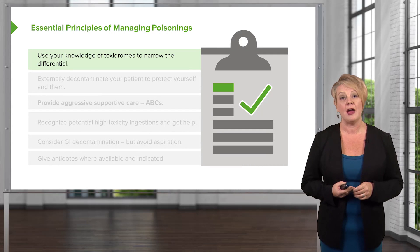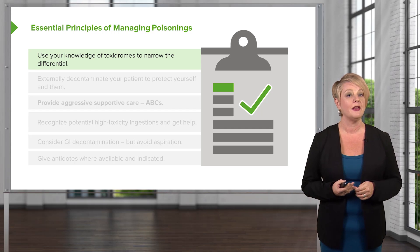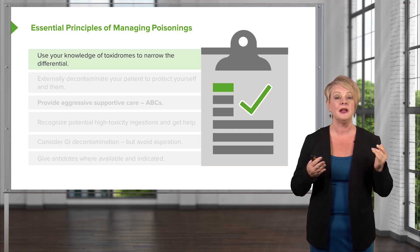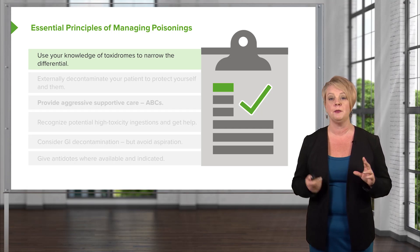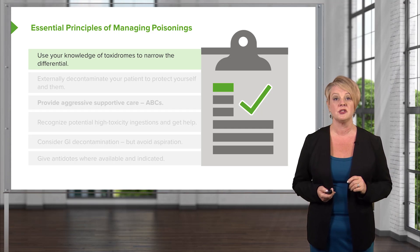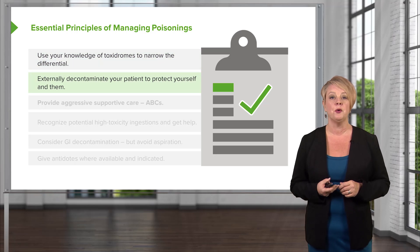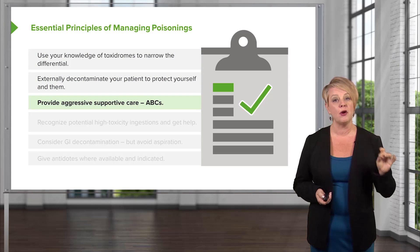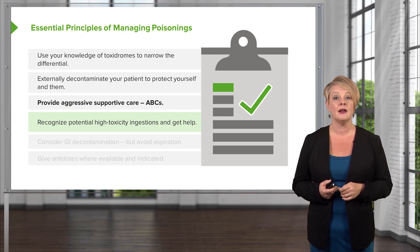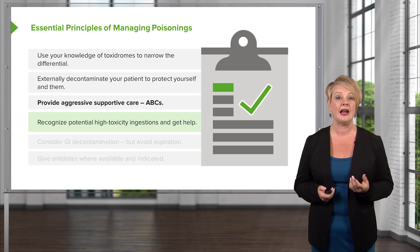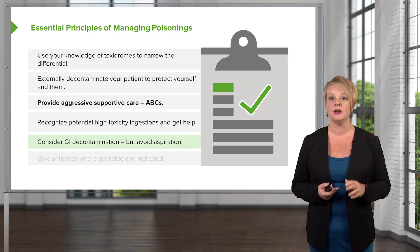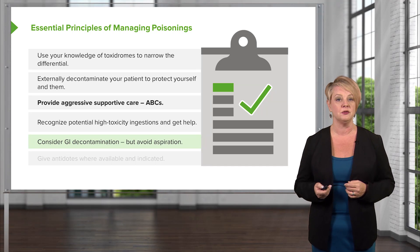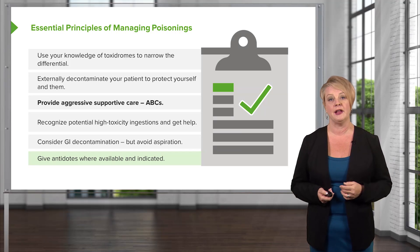In summary: know your toxidromes to recognize what drug class your patient was exposed to and narrow your differential. Externally decontaminate your patient to protect both yourself and them. Provide aggressive supportive care with a focus on the ABCs. Recognize high toxicity or high lethality ingestions and get help. Consider GI decontamination in patients with high risk of morbidity or mortality, but always protect their airway. Be aware of antidotes and use them when available and indicated.